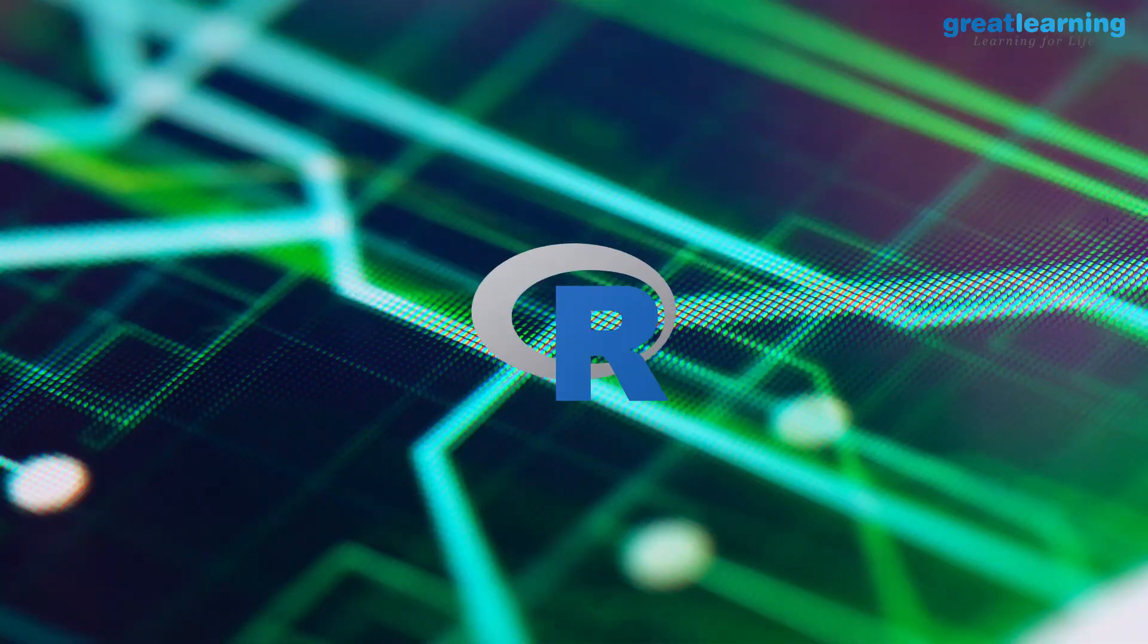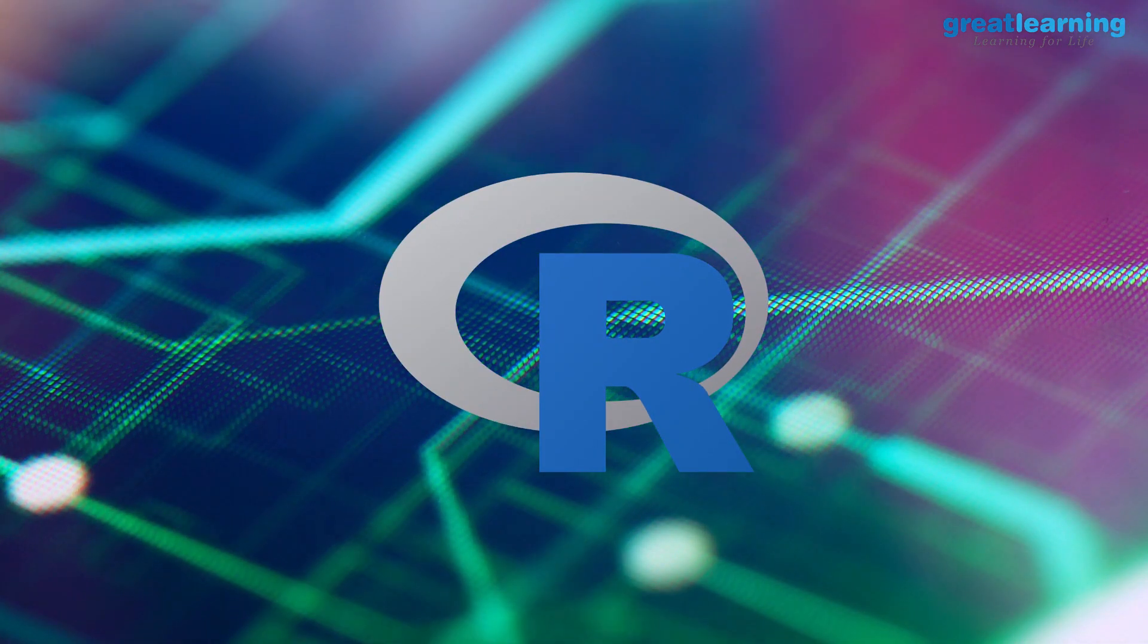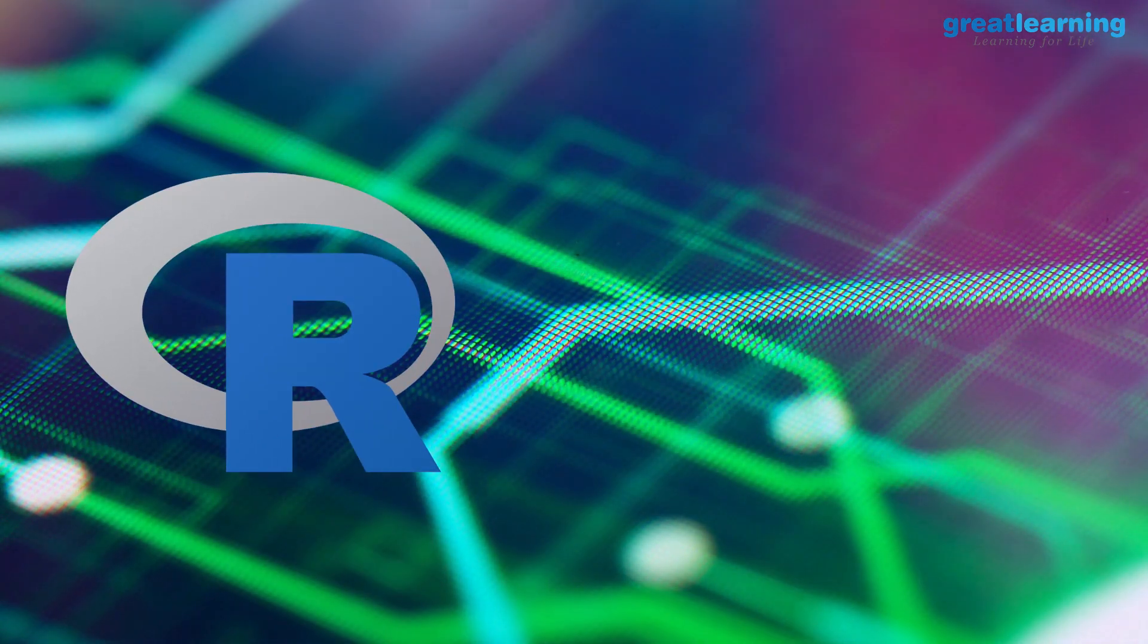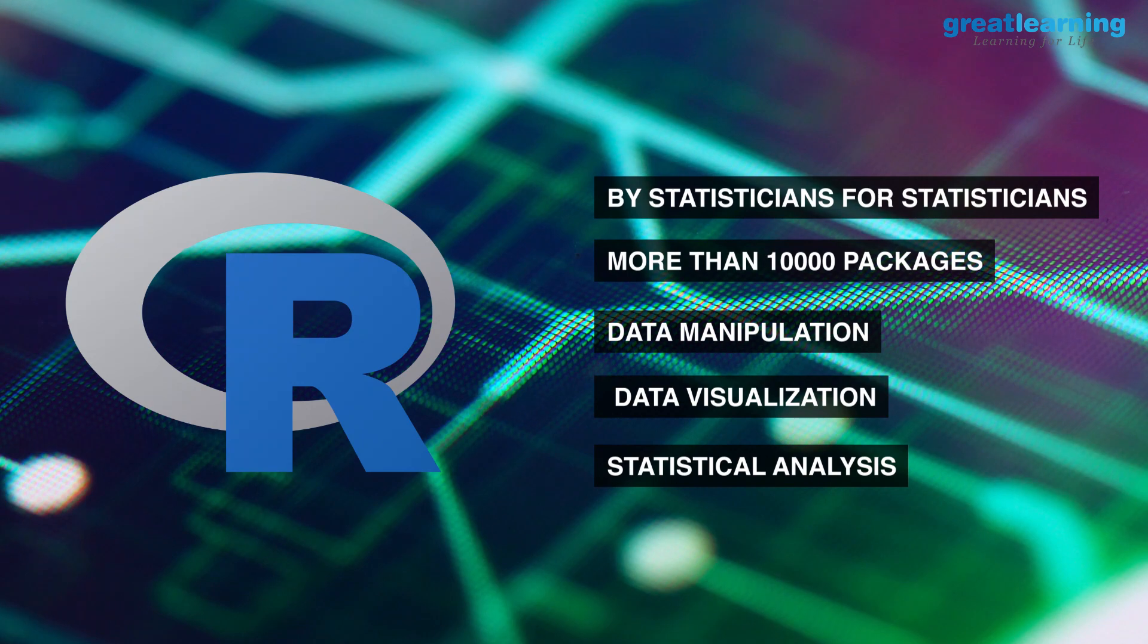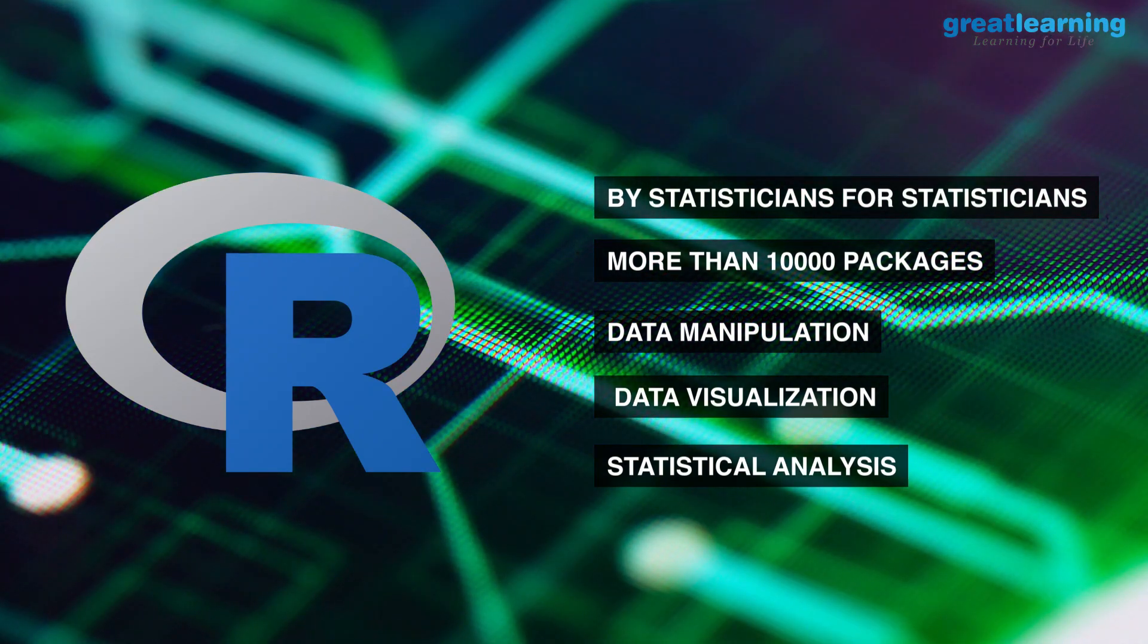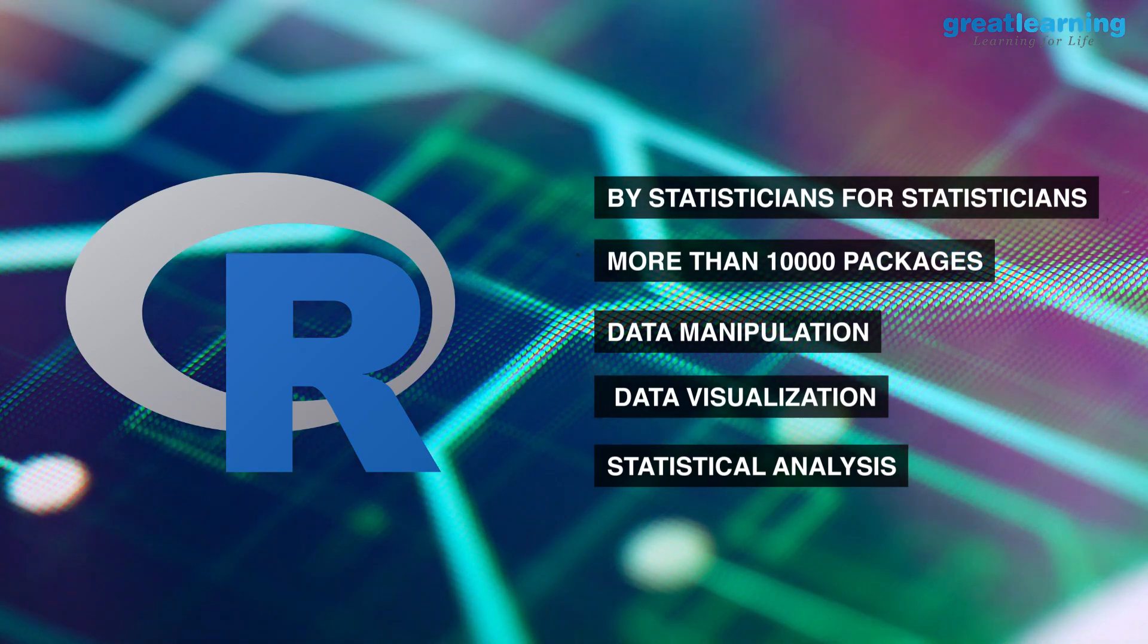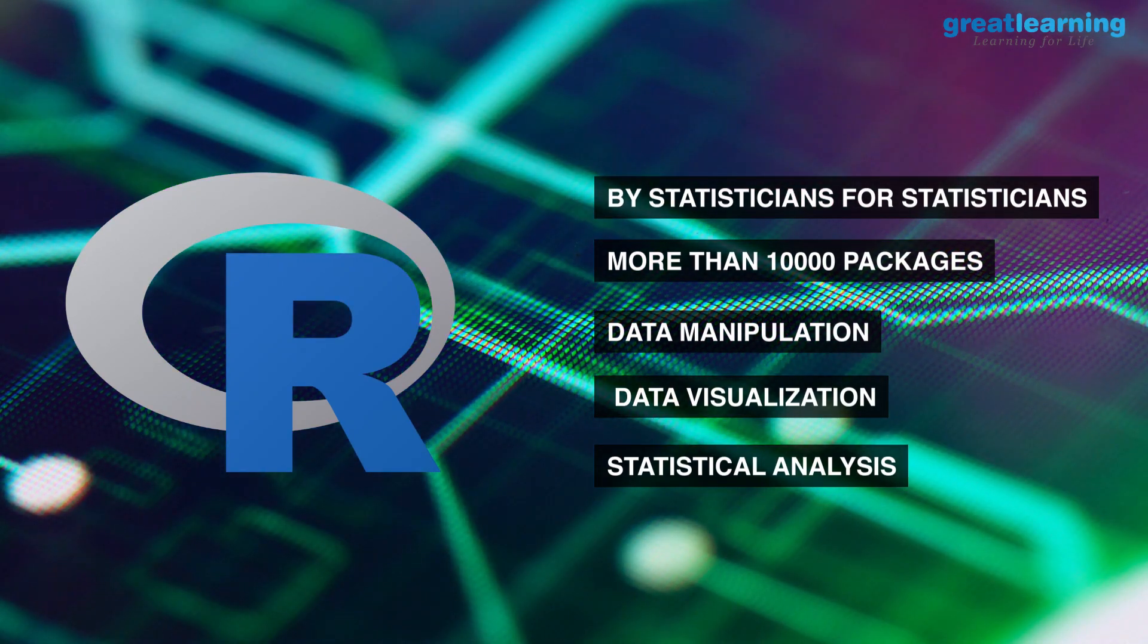R is the second most important language for a data scientist to learn. It is important because R is a language which was developed by statisticians, for statisticians, and provides more than 10,000 packages for varied purposes such as data manipulation, data visualization, and statistical analysis.